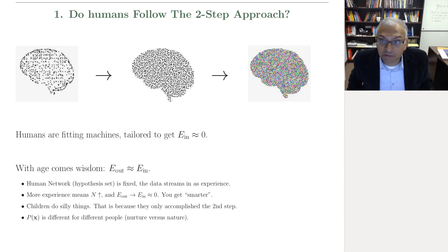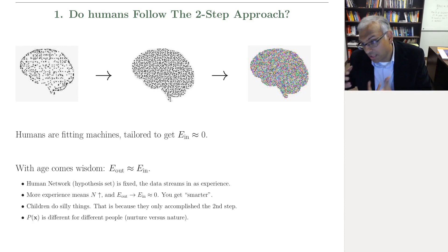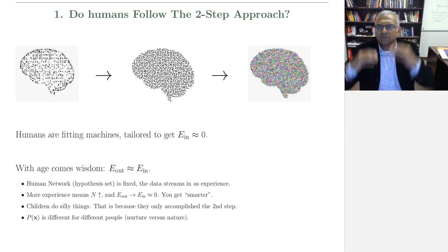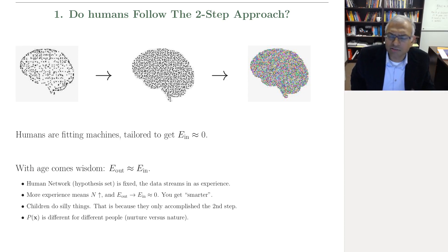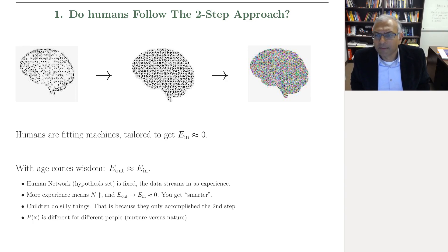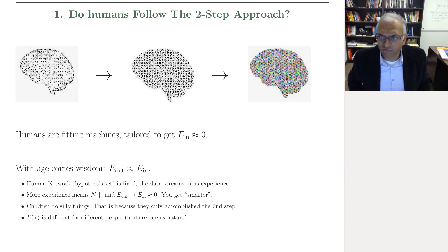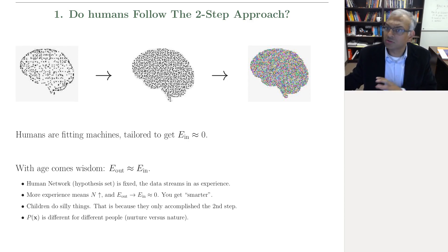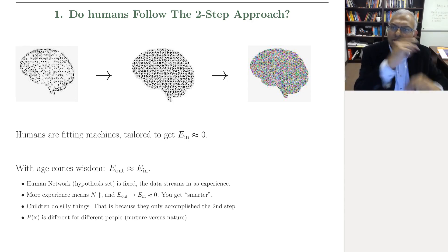You can see this in little kids — they do silly things because they have accomplished E_in approximately equal to zero for their limited experience (small n), but the error bar is large. So when they apply their representation of reality to new situations, they can do silly things. For example, my three-year-old, when he saw a tiger, said 'that's a zebra-lion' — because a new zebra and lion is what he'd seen. And then when he learned there's a thing called a tiger, his representation gets better, and he'll gradually get E_in close to E_out.